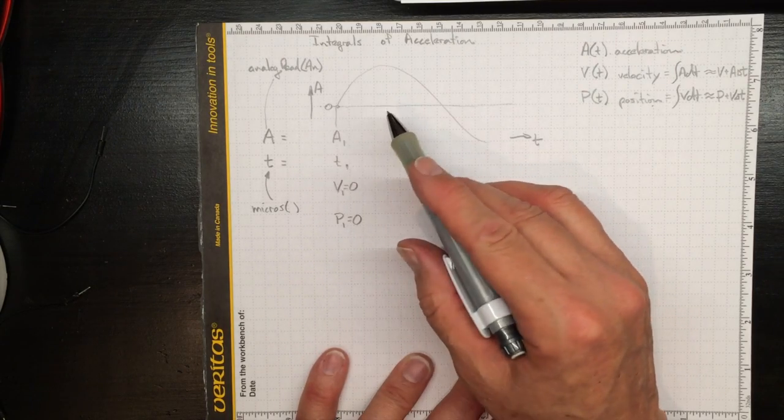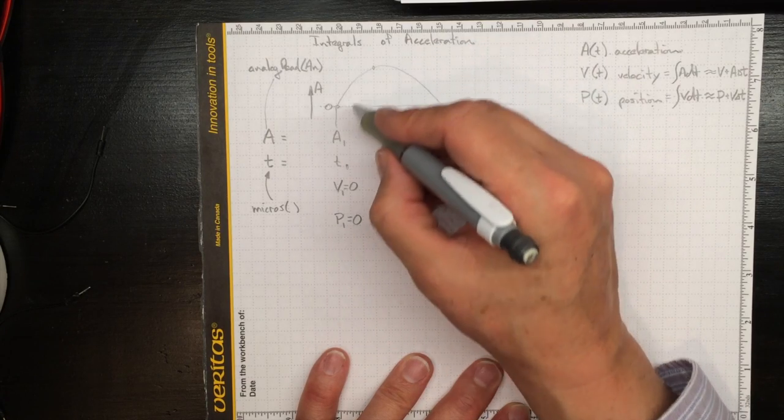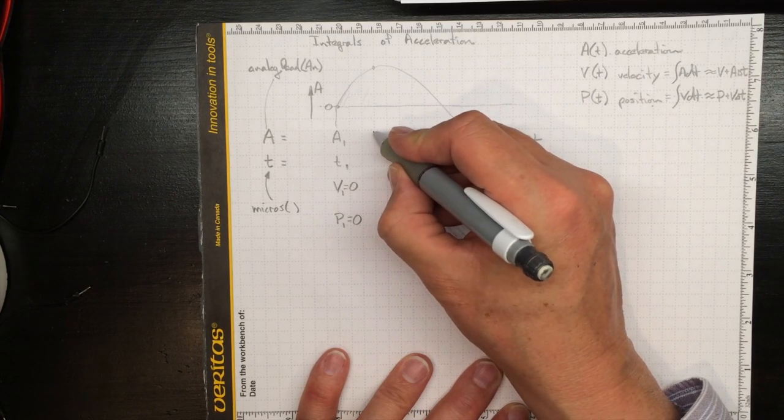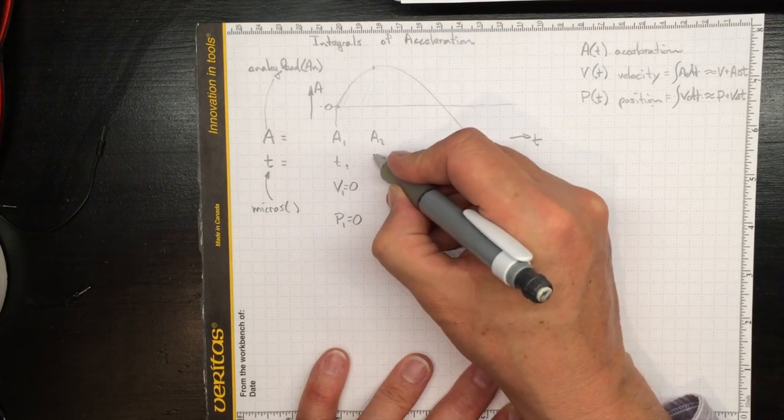Then we can integrate that forward in time. So if we go to our next data point, we want to integrate under that whole curve for the acceleration. We'll measure a2 and t2.